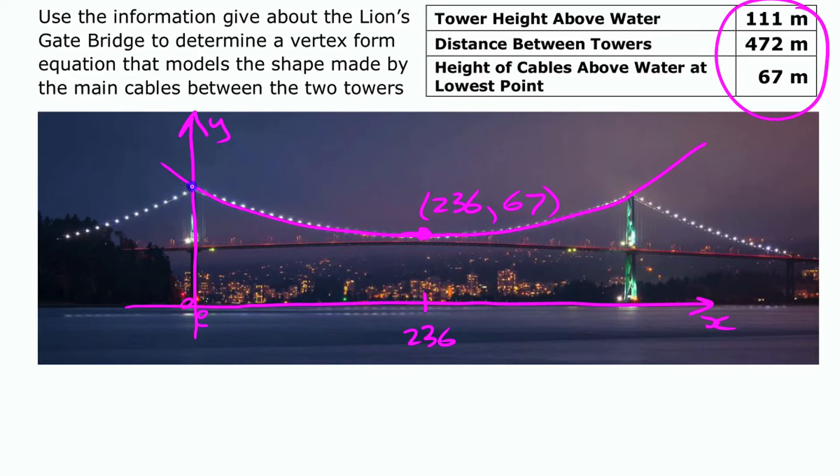And the top of the other tower then would be (472, 111). So I'll label that as well: (472, 111). Now that is enough to get the shape of that thing.